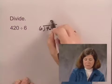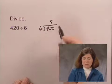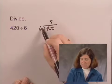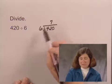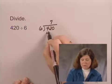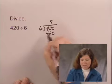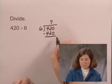So we write a 7 above the 2, and we multiply 7 times 6. Now this is really 7 tens, so we're multiplying 70 times 6. So we write 420, and we subtract, and we have a remainder of 0.